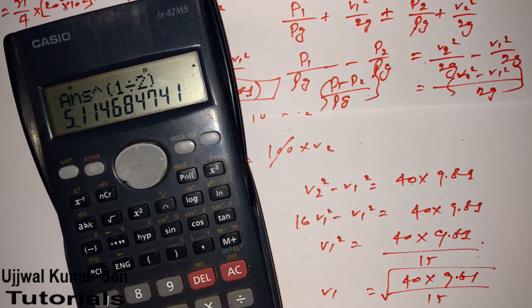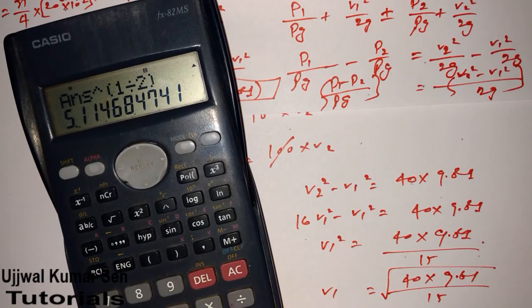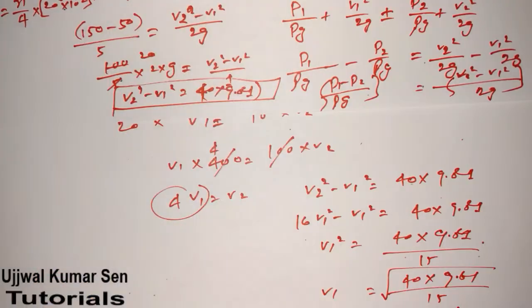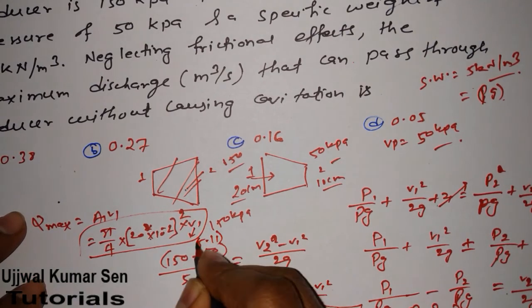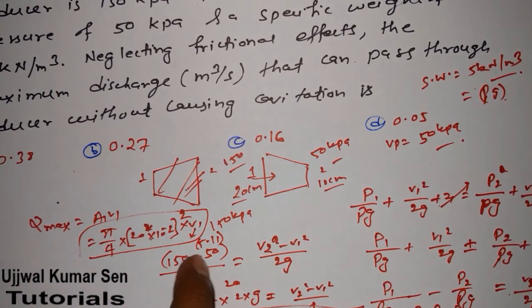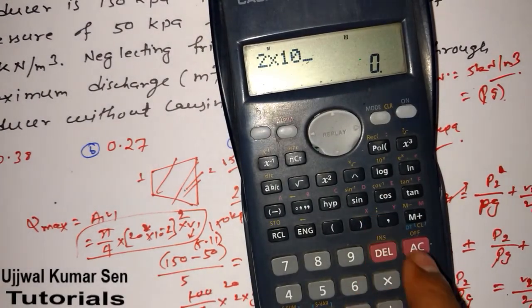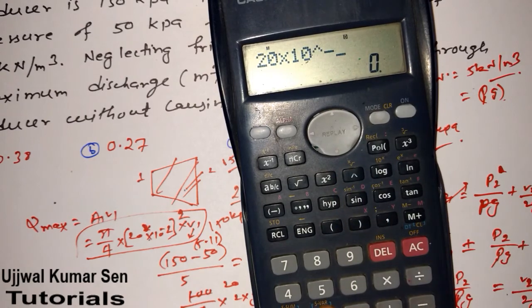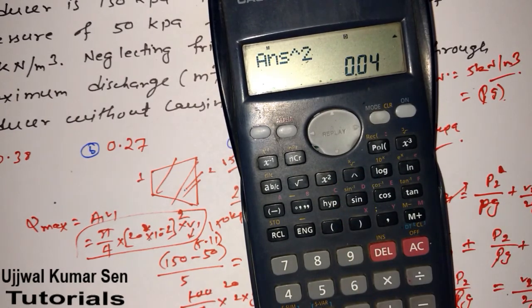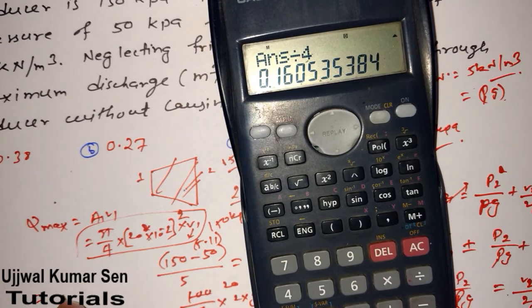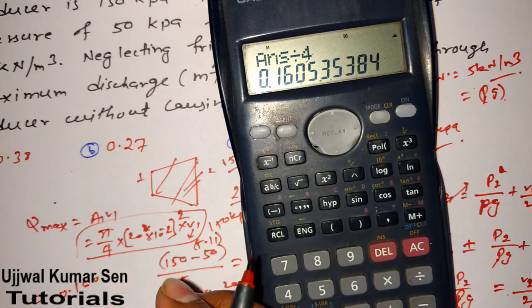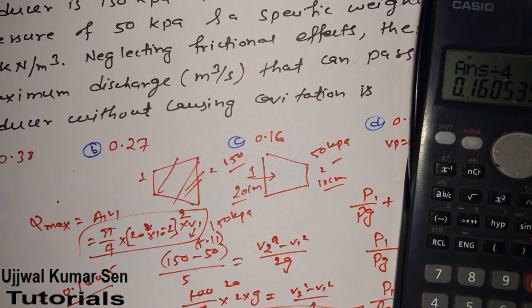Now we write 5.11 in place of V₁. Use calculator to calculate Q = (π/4) × (20 × 10⁻²)² × 5.11. That's 0.2² × 5.11 × π/4, which equals 0.16 m³/s discharge.